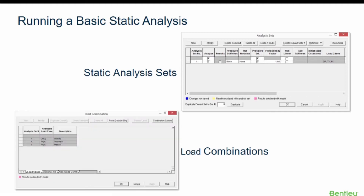After the static analysis is complete, you can review the combinations in the Load Combination dialog box, which has three tabs. The Load Case tab is used to review the load cases included in each analysis set. The Code Combinations tab displays the combination sets defined for piping code compliance, which will be used to check the code stress results. Some default combinations will already be created based on the active load cases and the code associated with the current piping system. Any default code combinations may be modified, deleted, or reset, and new user combinations can be created and modified in the same grid.